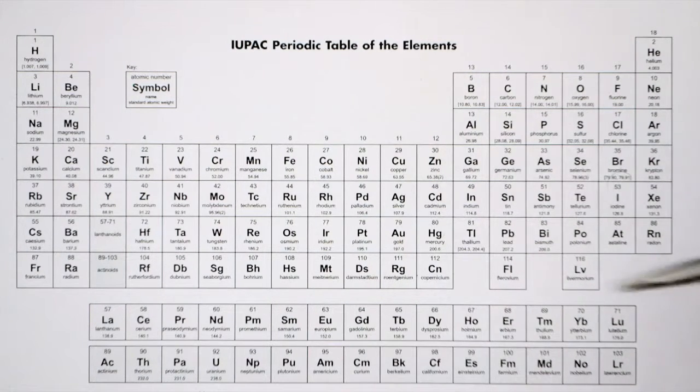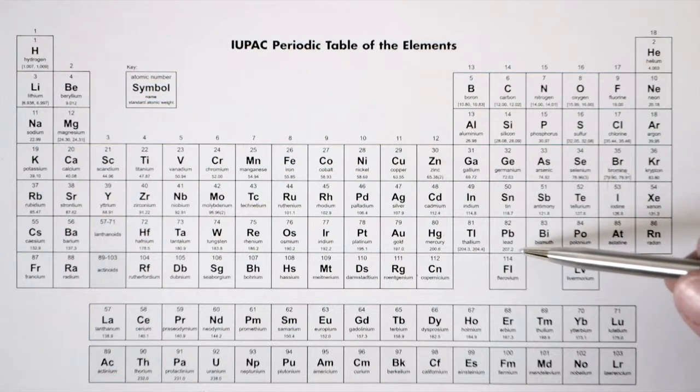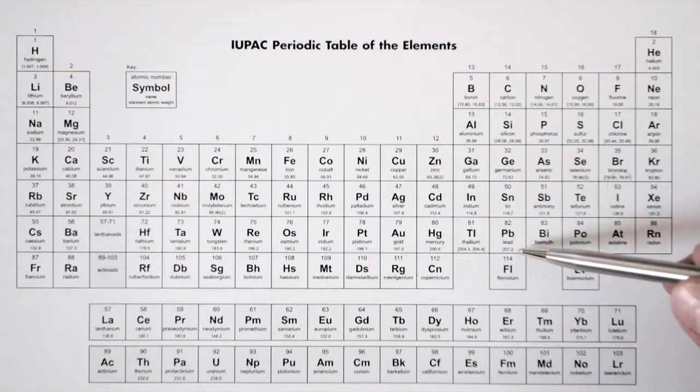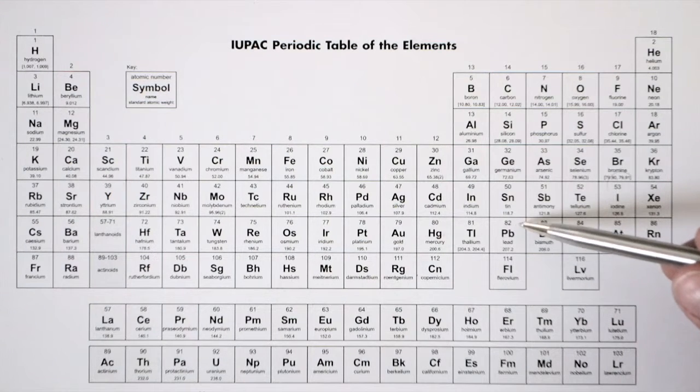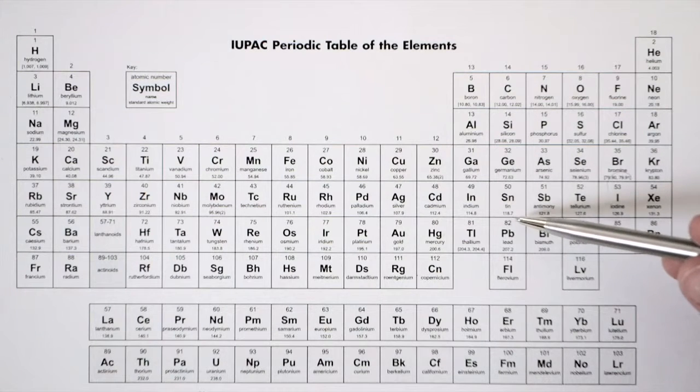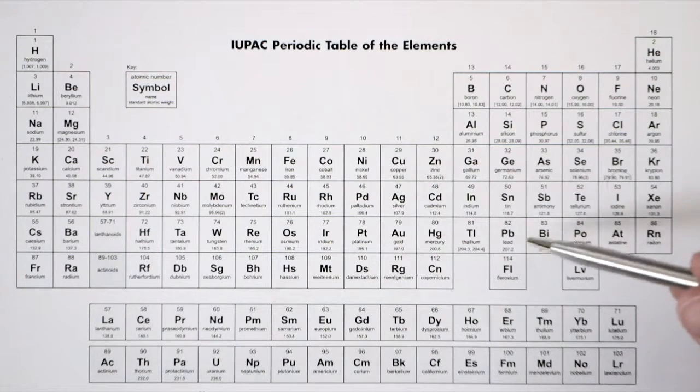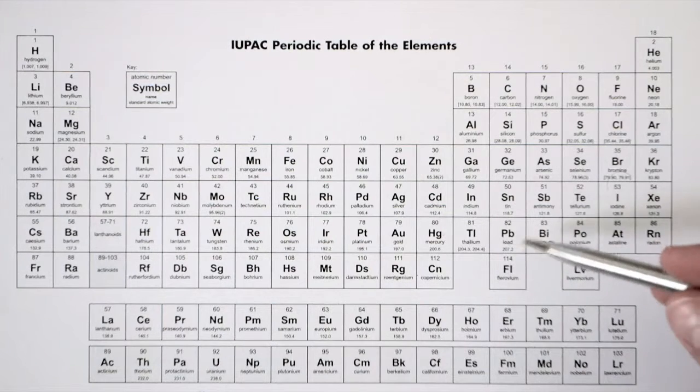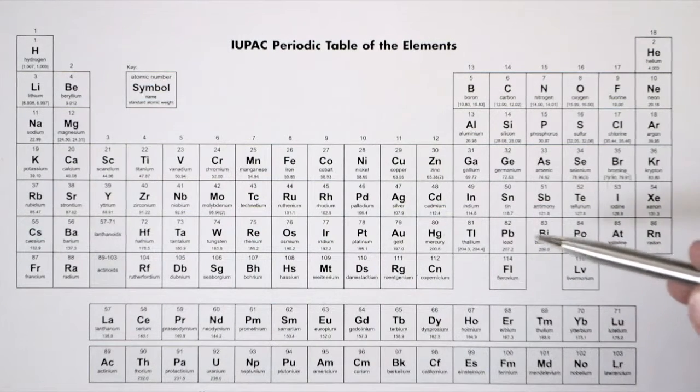We know that 207 being the total mass of a lead atom, minus 82 proton-caused mass units, means that there are 125 neutrons in a lead atom.